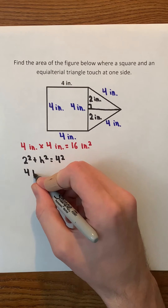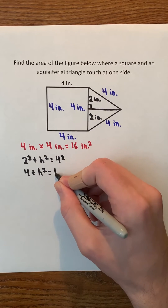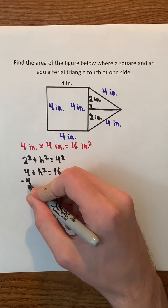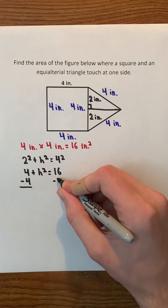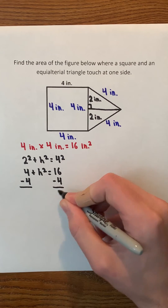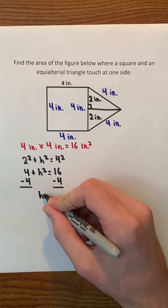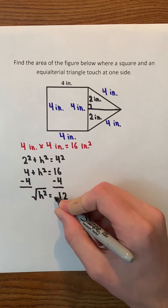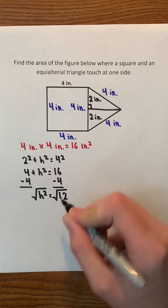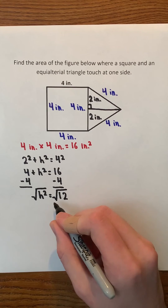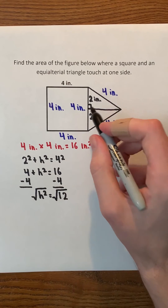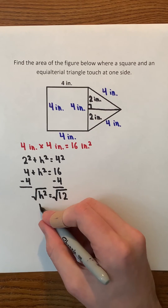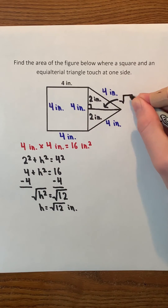2 squared is 4, and 4 squared is 16. Now, we're going to solve for h by first subtracting 4 on both sides of the equation, and we get h squared equals 12. Then we're going to take the square root of both sides. We don't need the plus-minus next to the square root of 12 since the height is positive. Therefore, the height has a length of the square root of 12 inches.